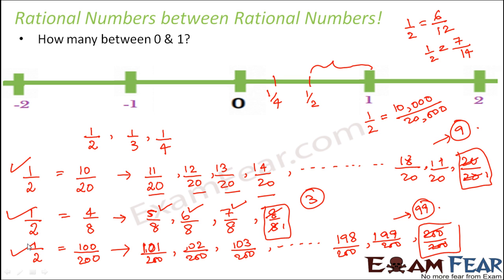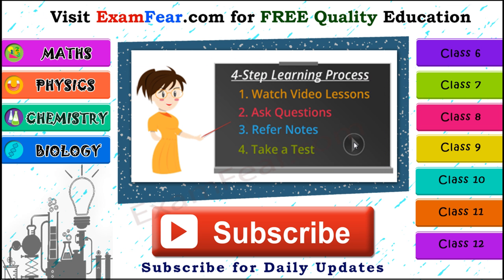So basically if you keep writing it in more number of ways, you will get more and more rational numbers that would exist between 1 by 2 and 1. So when we say between 0 and 1, you actually have infinite number of rational numbers, right? So this very clearly proves that there exists infinite number of rational numbers between any two rational numbers, because the beauty of rational number is that it is the ratio of two numbers so it can be represented in plenty of ways. Thank you.